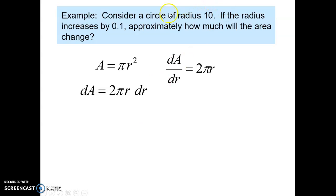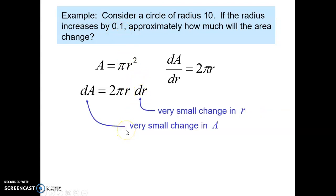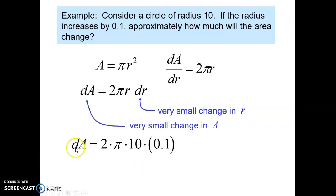Now we look at what we have in our given information. We're given that at this particular point in time the radius is 10, so we substitute 10 in for the radius. We're also given that at this instant the radius is increasing by a very small amount, dr — a very small change in the radius. So we substitute that value in for dr. When we do, we get an expression that answers our question: approximately how much will the area change? The change in area, dA, will change by approximately 2π.